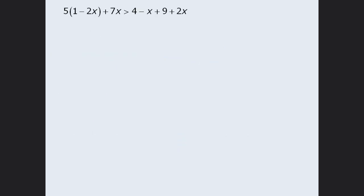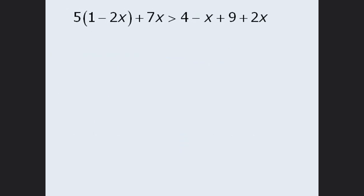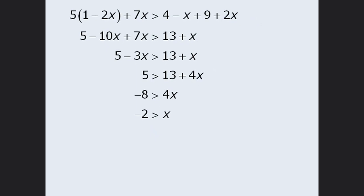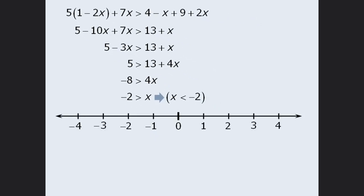To solve this next inequality, we'll first expand the left-hand side and then simplify the right-hand side. Then we'll simplify the left-hand side, add 3x to both sides, subtract 13 from both sides, and divide both sides by 4 to get negative 2 is greater than x — or equivalently, x is less than negative 2. To show this on the number line, we'll draw a circle around negative 2 and then draw an arrow to the left.